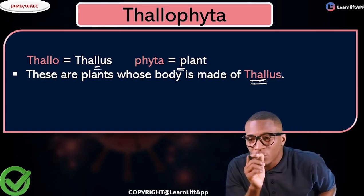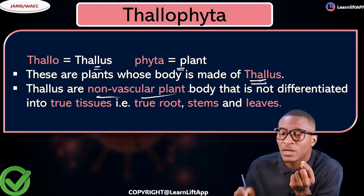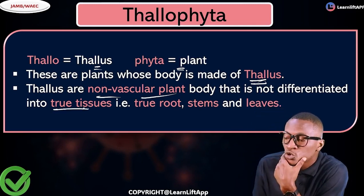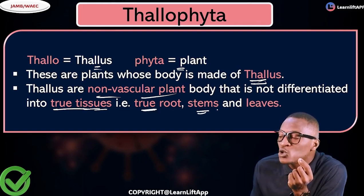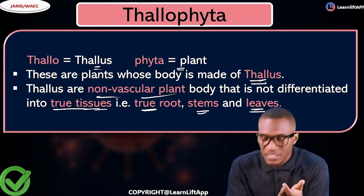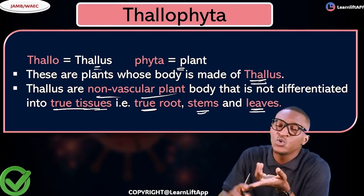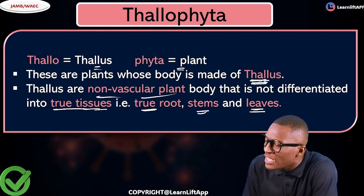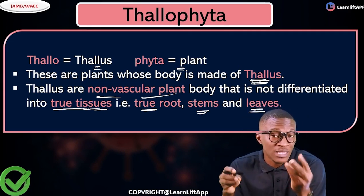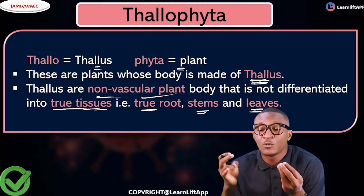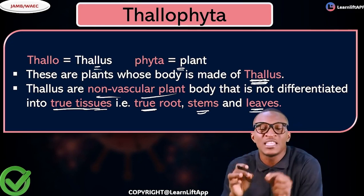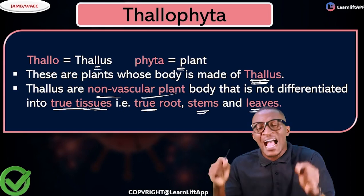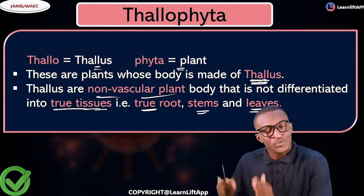Thallus means non-vascular. Non-vascular means they don't have true tissues. They are not differentiated into true tissues — they don't have true roots, they don't have true stems, they don't have true leaves. Any plant that does not have true roots, true stem, and true leaves is said to be non-vascular. Such plants are thallus plants, and we call them thallophytes.